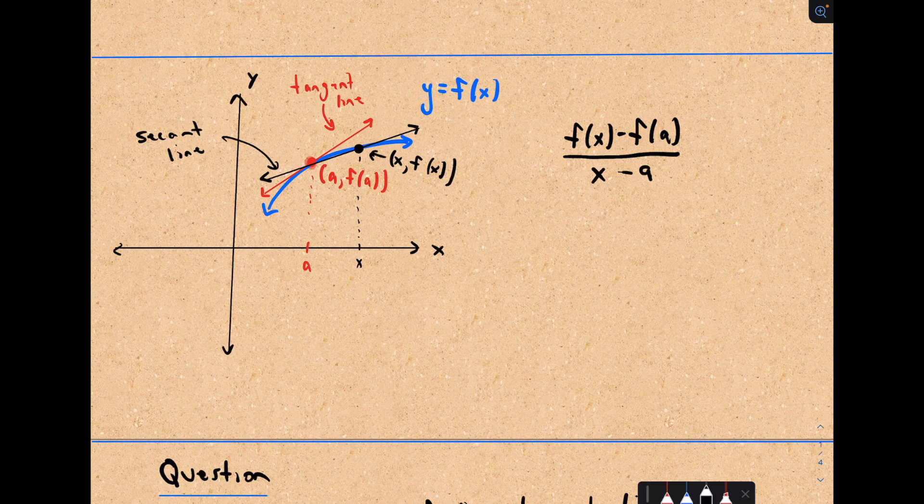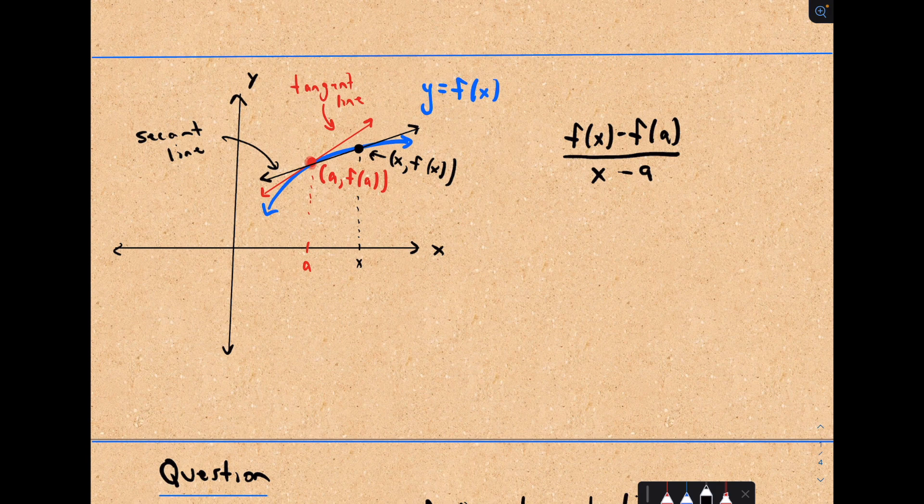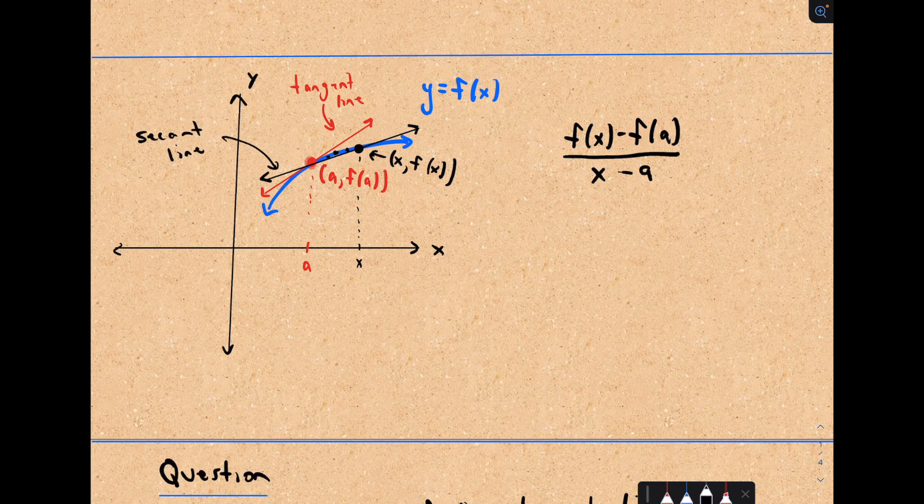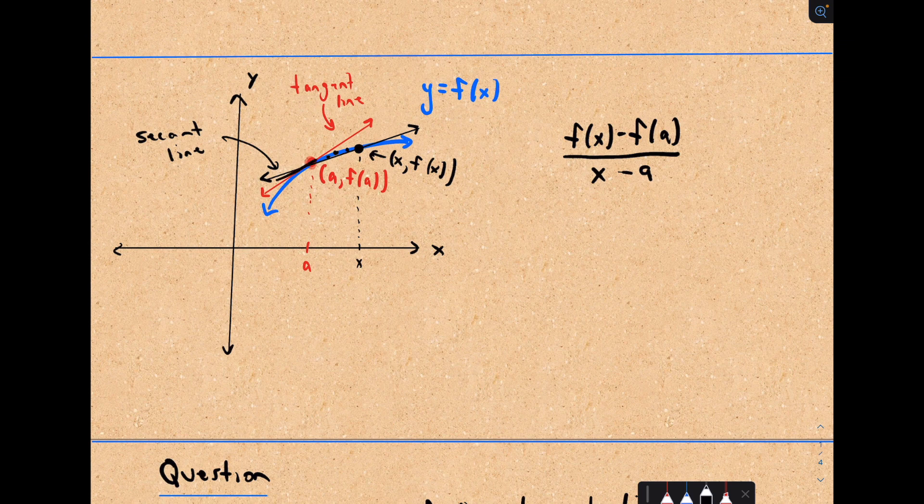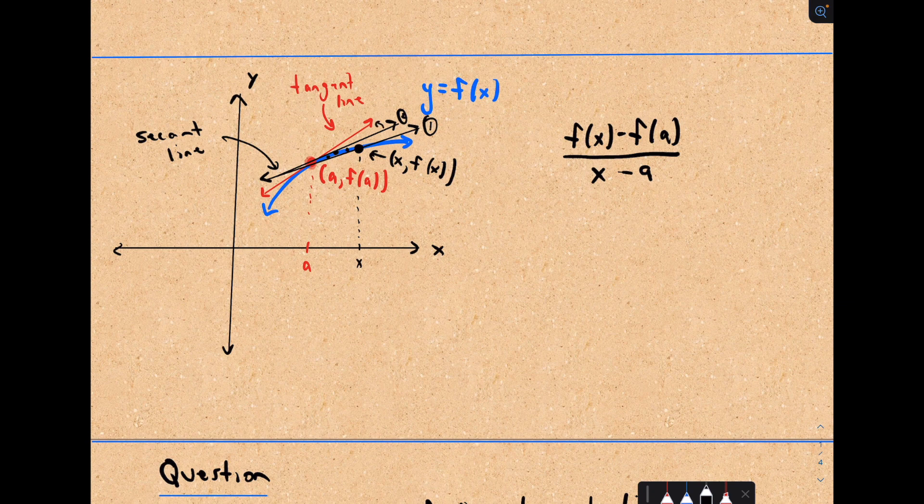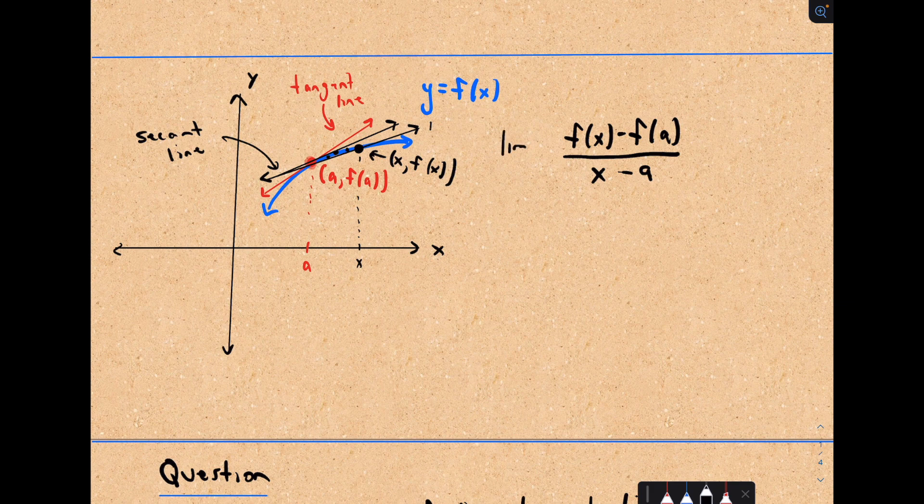To make our secant line look more and more like our tangent line, the idea is we make this point get closer and closer and closer. So my point a comma f of a stays fixed, but the points that I'm using for my secant line are going to get closer and closer and closer. Hopefully the secant lines are starting to resemble the shape of our tangent line. The way that we can write that is we'll take the limit as our x coordinate gets closer and closer to a.